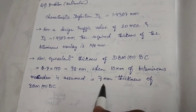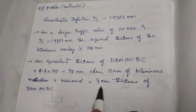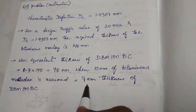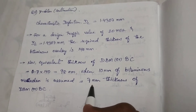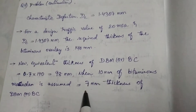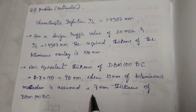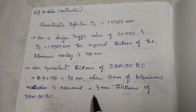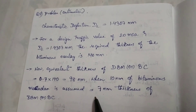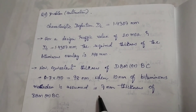When 10 mm of bituminous macadam is assumed, we take the thickness of bituminous macadam as 7 mm. I hope you understood the concept and procedure for calculating the thickness of bituminous macadam for a proposed state highway. If you have any doubts, please comment. Wish you all the best, thank you.